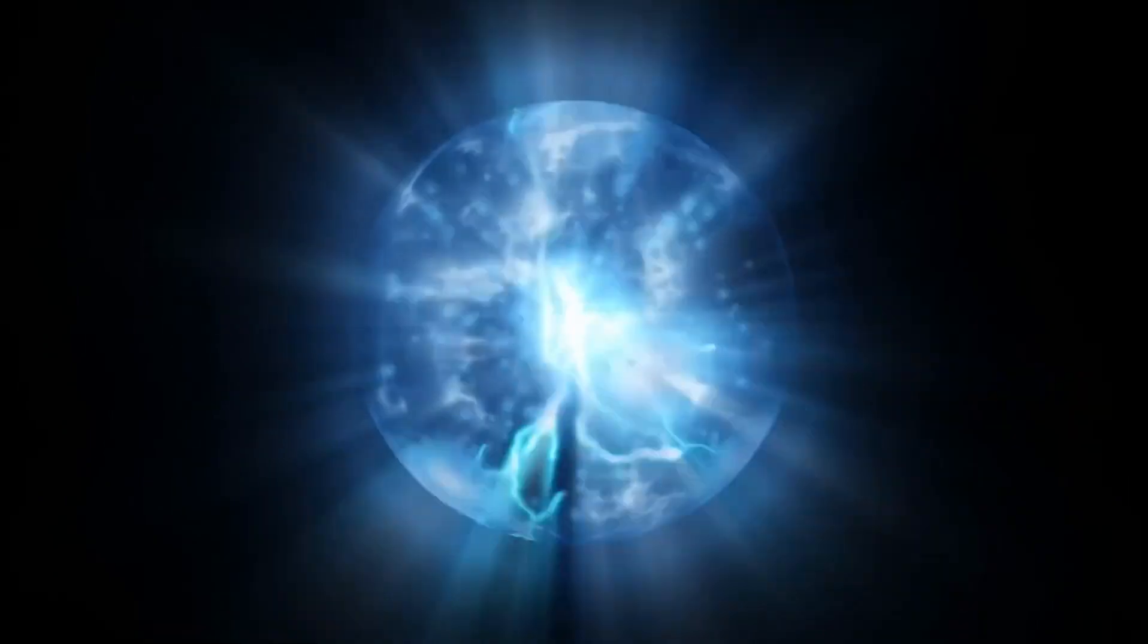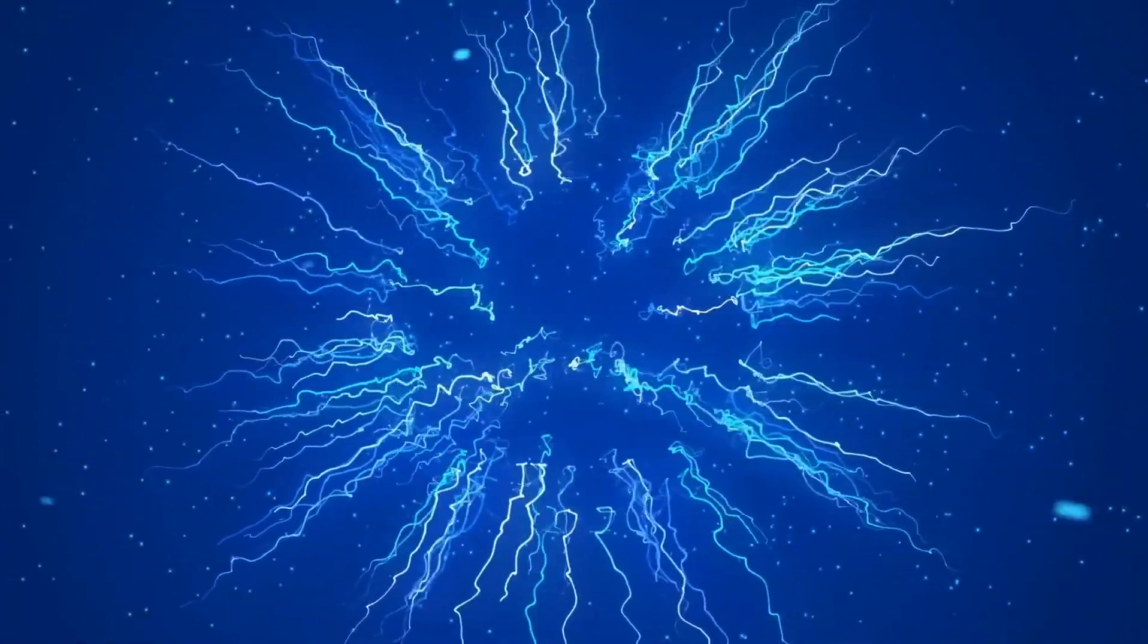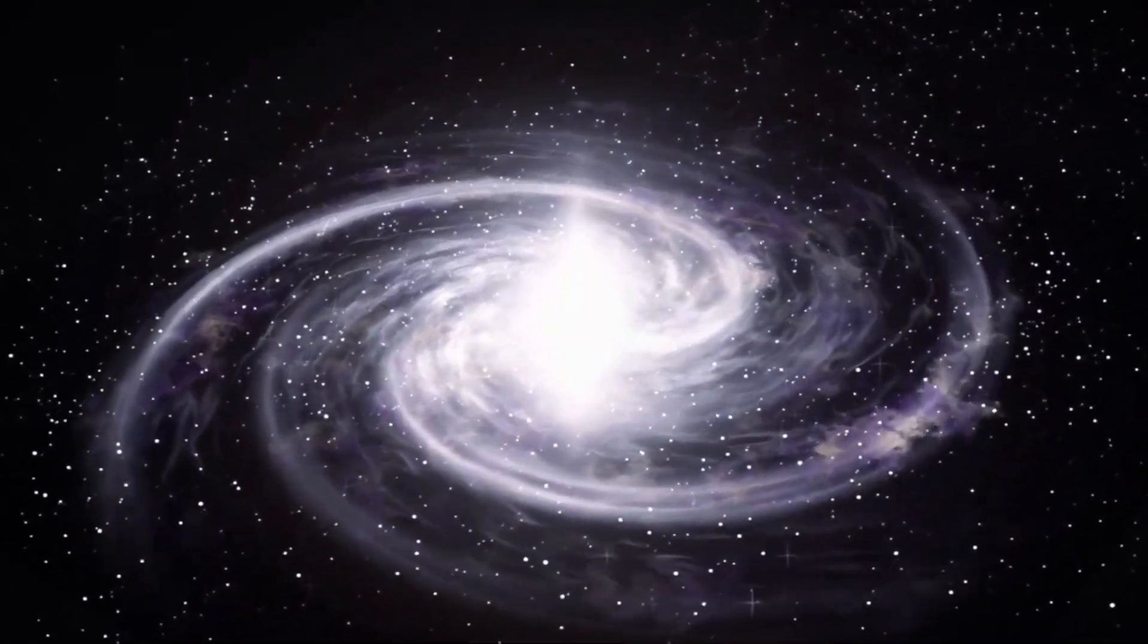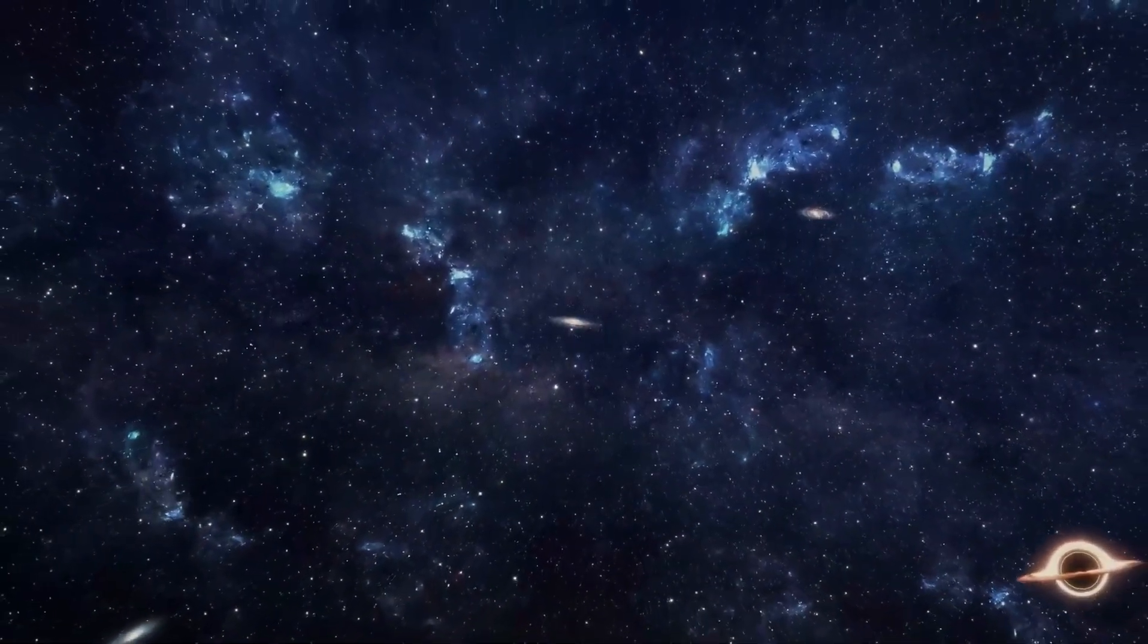Dark stars are hypothesized to have widths hundreds of times greater than that of the Sun. These stars, composed mostly of hydrogen and some helium, existed in protogalaxies when the universe contained mostly those two elements. Heavier elements hadn't yet been forged by nuclear fusion in stars.